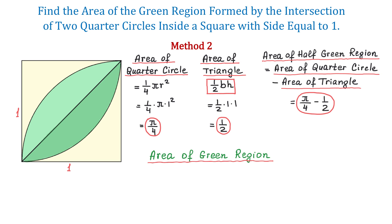That will be 2 times (π over 4 minus 1/2). Distributing 2, we get π over 2, and 2 times negative 1/2 is minus 1. So here we found the area of the green region, and that is π over 2 minus 1.